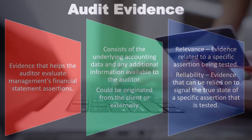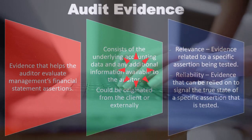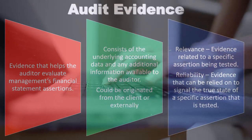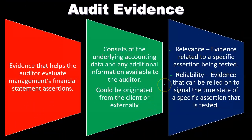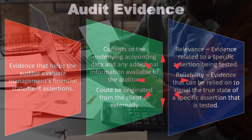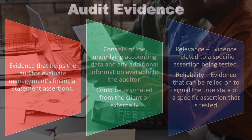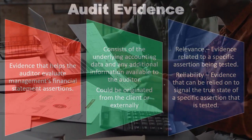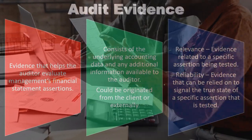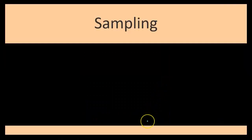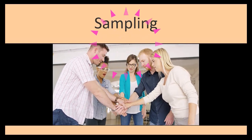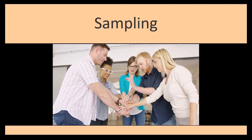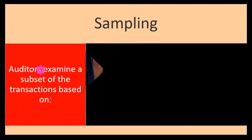We go to the bank and ask them independently — without talking to the company — what the bank balance is at a given point in time. That's going to be more valuable evidence. We rank the evidence like a detective, determining how reliable it is and what type we want to spend our time looking into. We want to spend time on the most reliable evidence and gather the least amount of evidence that can still test our assertion, in order to be efficient.